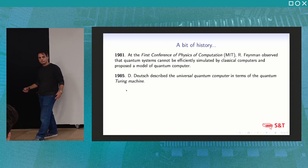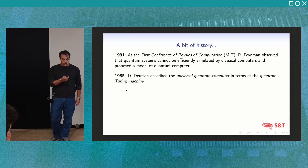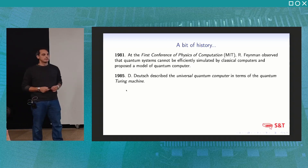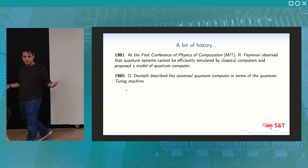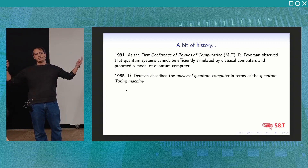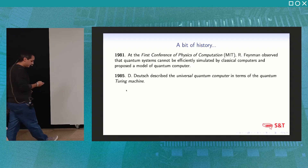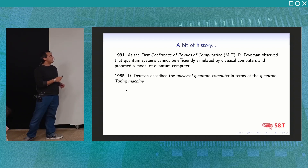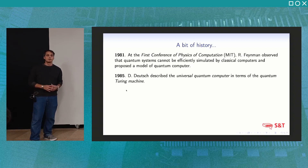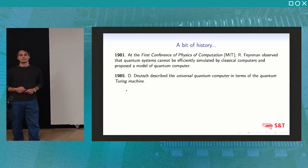A bit of history. Quantum information and quantum computing can historically be traced to the first conference on physics and computation, where Feynman proposed a quantum computer as a quantum simulator. Quantum systems and physical systems are hard to classically simulate, so we need a quantum machine in order to simulate a quantum system — simulations are a useful tool in physics to study physical systems.